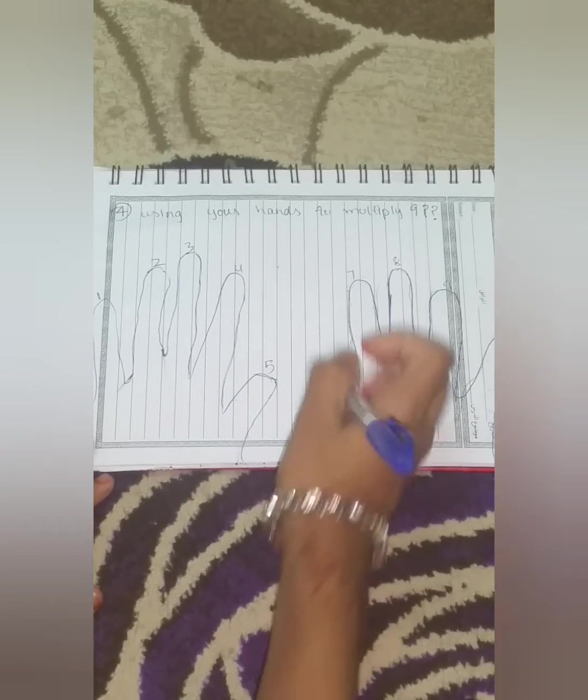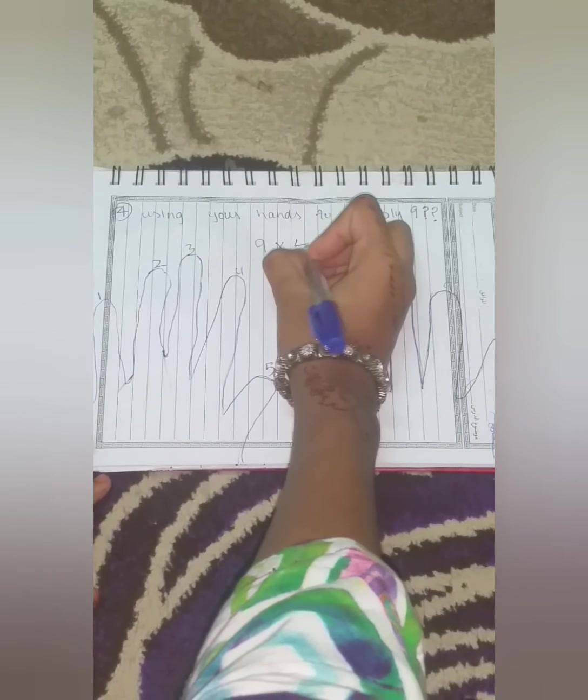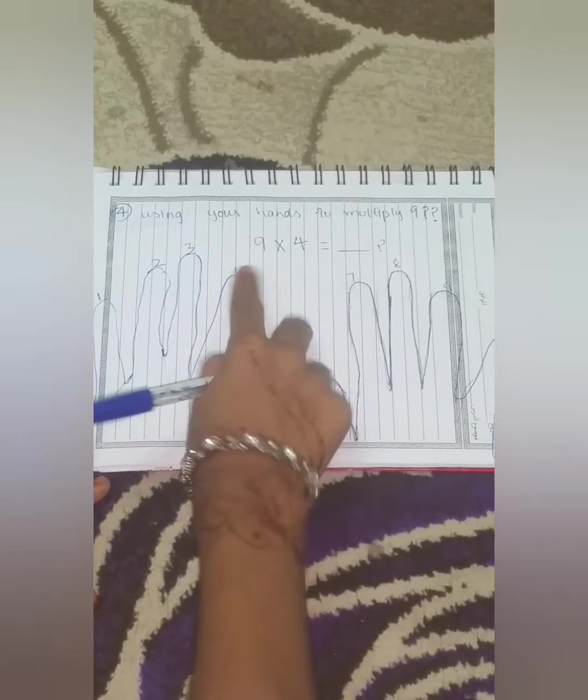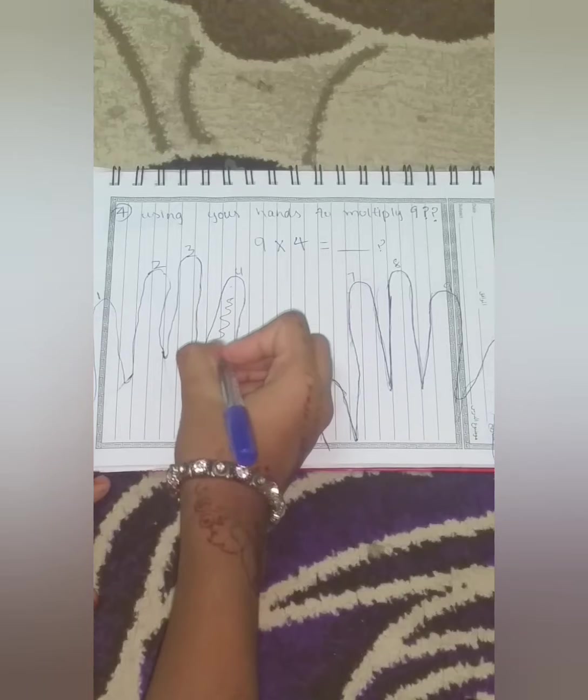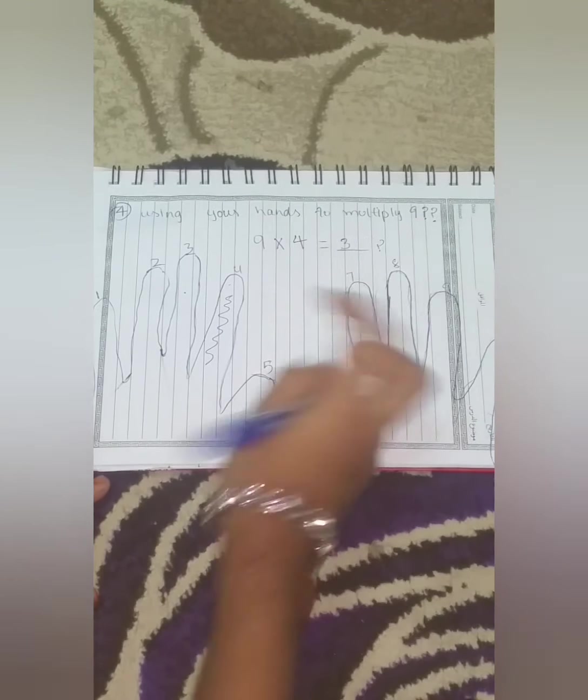So now how will we multiply it with 9? So when we get the answer like 9 into, here we get 9 into 4. First of all, we will mark, for here, first of all, we will mark the finger of 4. What's the previous finger? Here it's 3. So our first digit will be 3.